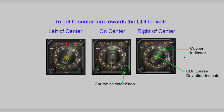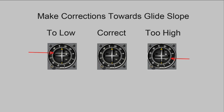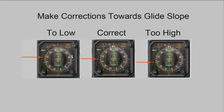As we turn towards the 283 course, this needle will rotate around accordingly. The same thing is true for the glide slope on the HSI: if you're too low, the indicator will be above center and you need to climb; if you're too high, the glide slope needle will be below center and you need to descend. There's a small dot on the left side of your HSI indicator showing glide slope position — works the same way.